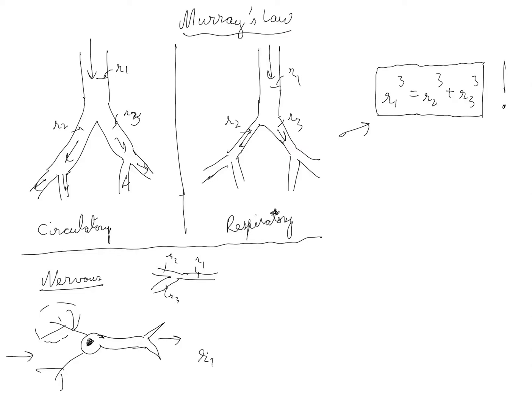And it turns out here the relationship is slightly different. You don't see a third power as you see in Murray's law. You see a one-half power. You see a one-half power in the exponent. This by the way is called Rall's law, after Wilfred Rall who worked on dendrites.